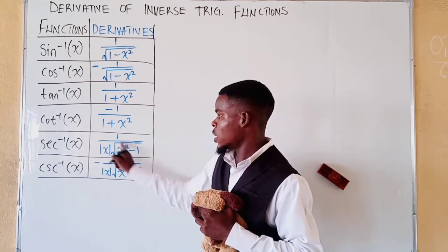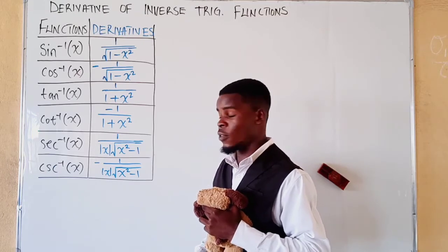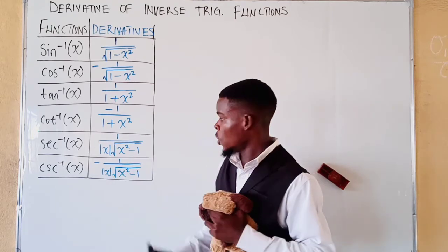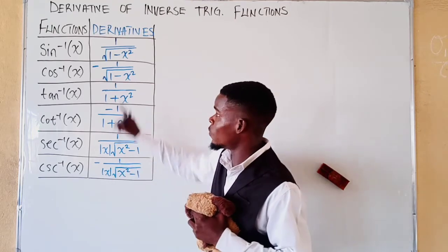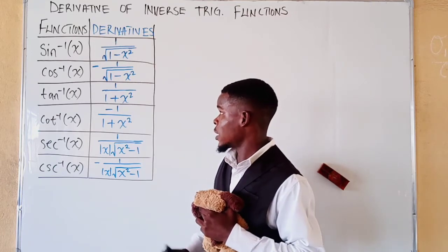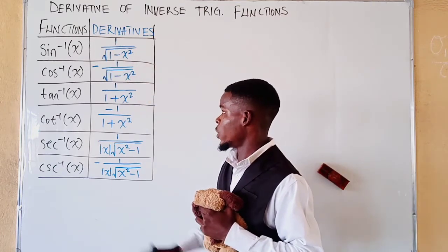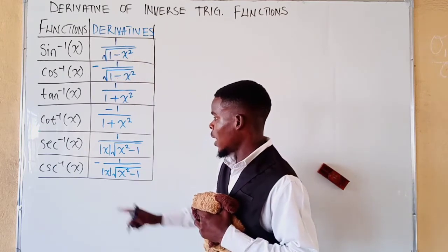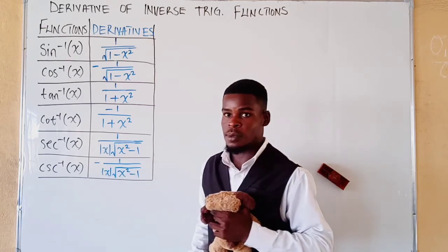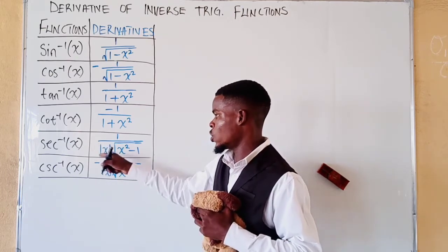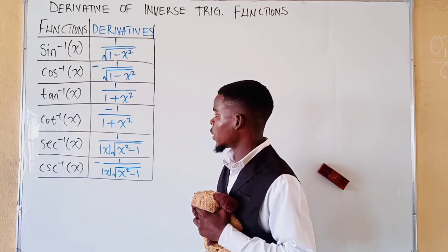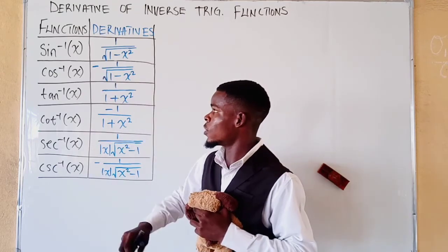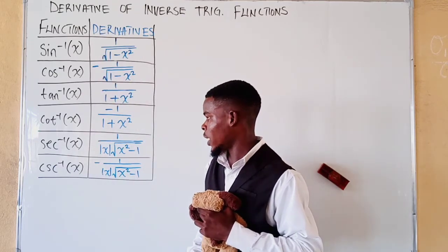The derivative of secant inverse is a bit more complex — it is one over the absolute value of x times the square root of x squared minus one. Notice the difference from sine inverse: here the radical is x squared minus one, whereas for sine inverse it was one minus x squared. Also, we multiply by the absolute value of x, though in most cases that is ignored for simplicity.